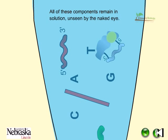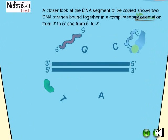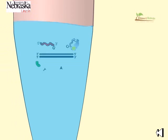All of these components remain in the solution, unseen by the naked eye. A closer look at the DNA segment to be copied shows two DNA strands bound together in a complementary orientation, from 3-prime to 5-prime and from 5-prime to 3-prime.